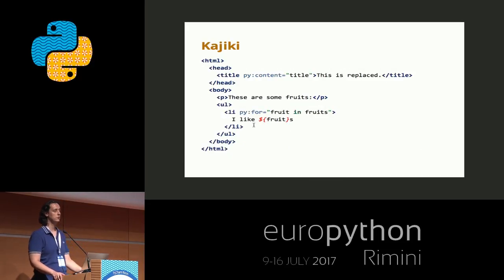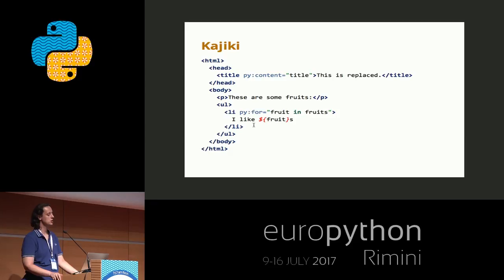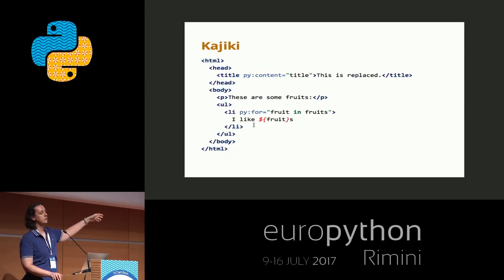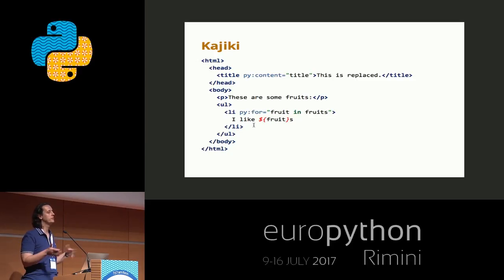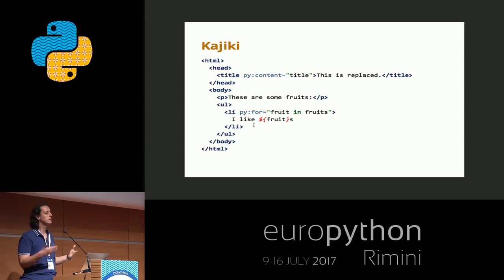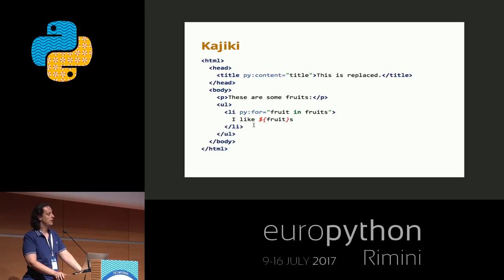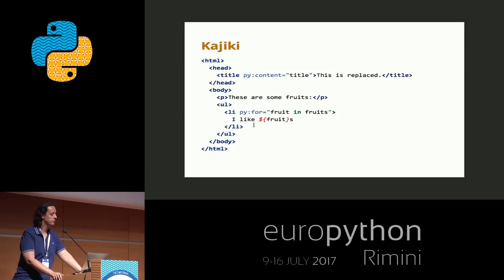This is the syntax of Kajiki. From this short example, you can see that the code itself is pure HTML with some added attributes. For example, you can see py:content or py:for and things like that. The py:content means replace the content of this tag with the value of the expression contained in the py:content. The py:for, of course, means repeat this tag as many times as the iterations of the loop. And you can put variables using one of the most widespread notations for variable replacement in templates.